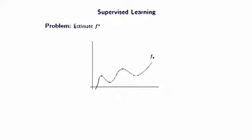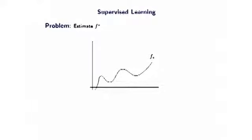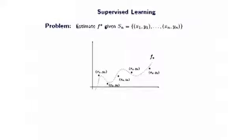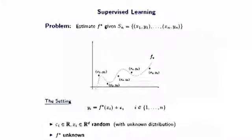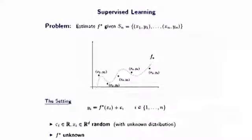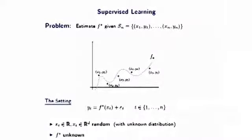Our context is supervised learning. The problem is to estimate a function F-star given a number of examples. The examples satisfy the classical input-output relation. Note that the input and the noise are random with an unknown distribution, and F-star is unknown too.